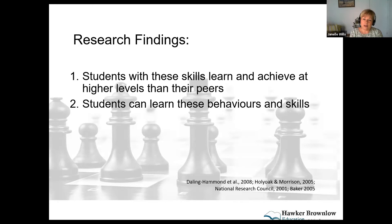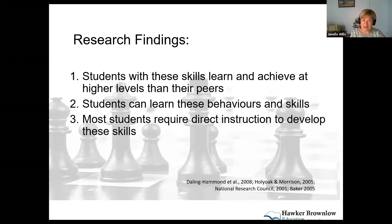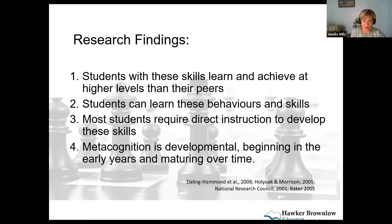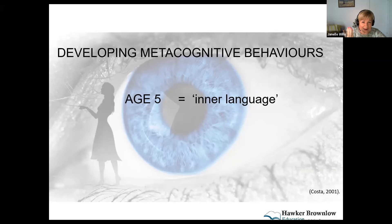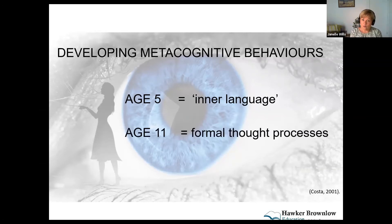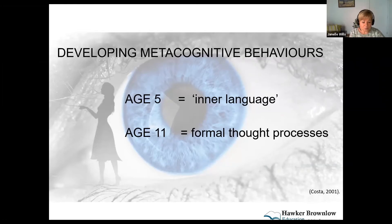We know that metacognitive behaviors and skills can be learned but they do need direct instruction — we can't just assume our students are going to get this. Metacognition is developmental, beginning in the early years and maturing over time. Research indicates it generally starts to develop around age five when inner language is beginning to develop, and then becomes more formalized around age 11 as formal thought processes develop.